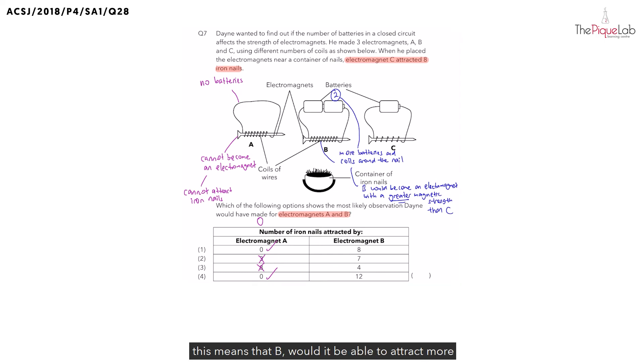This means that B would be able to attract more nails than C. So let's write this down: it would attract more nails than C. And remember earlier, how many nails did electromagnet C attract?